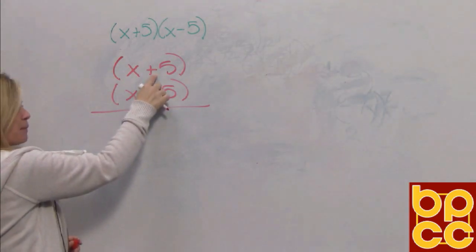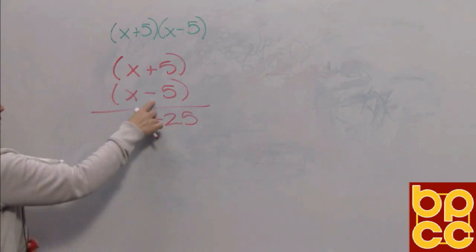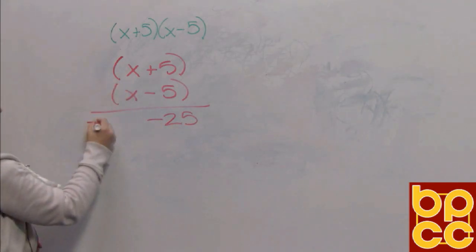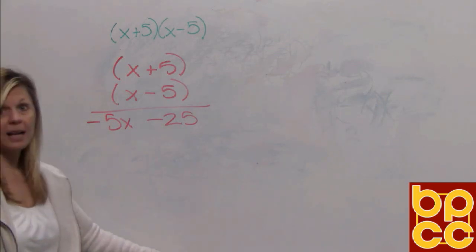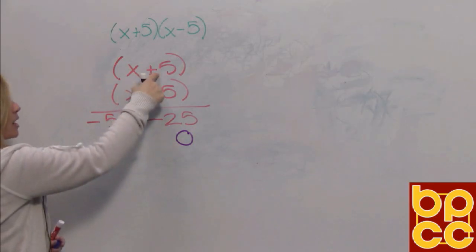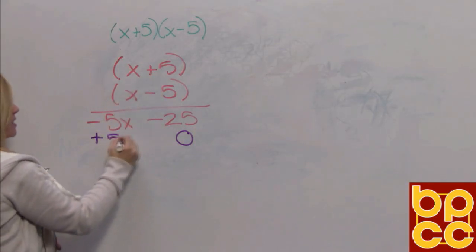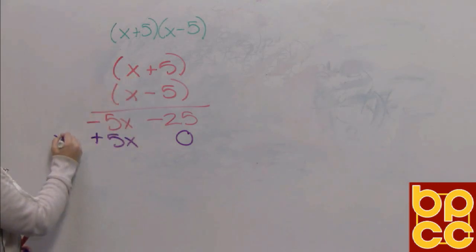Negative 5 times positive 5 is negative 25. Negative 5 times x is negative 5x. We're done with the negative 5, so we'll put our placeholder and we'll move on. x times positive 5 is positive 5x. x times x is always x squared.